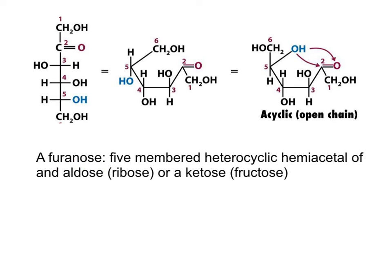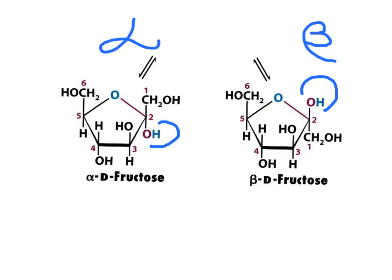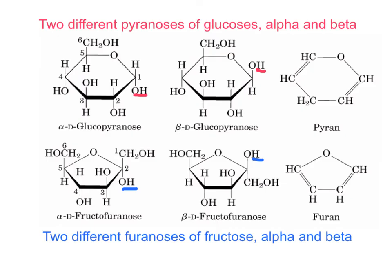Ribose is another monosaccharide that will be stable in the form of a furanose. The products are the alpha-anomer when the OH is below the overall plane, and the beta-anomer when the OH is above the plane. This is a summary of the stable structures of glucose and fructose.